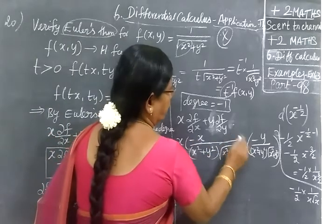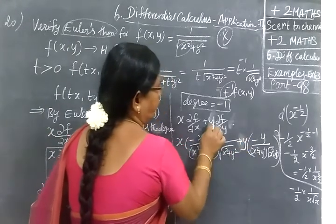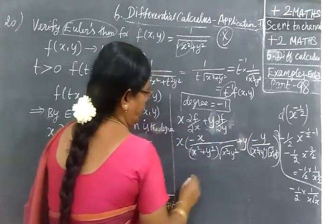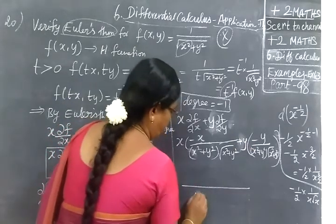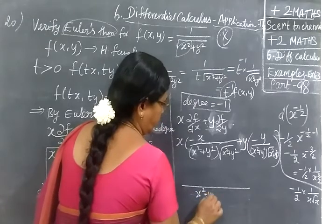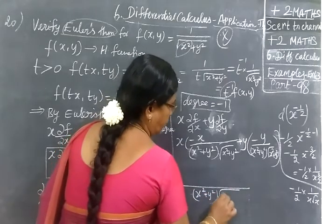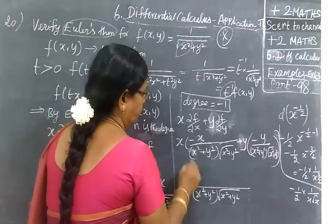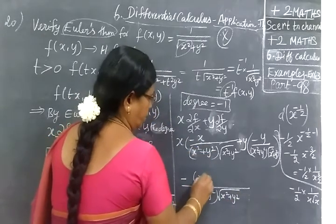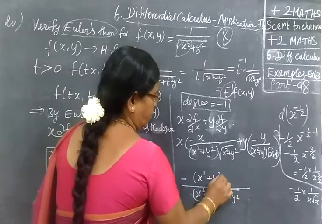x² plus y into the term. Now y is there, so y into y, y². So you will take denominator common. So (x²+y²)√(x²+y²). Take minus common.